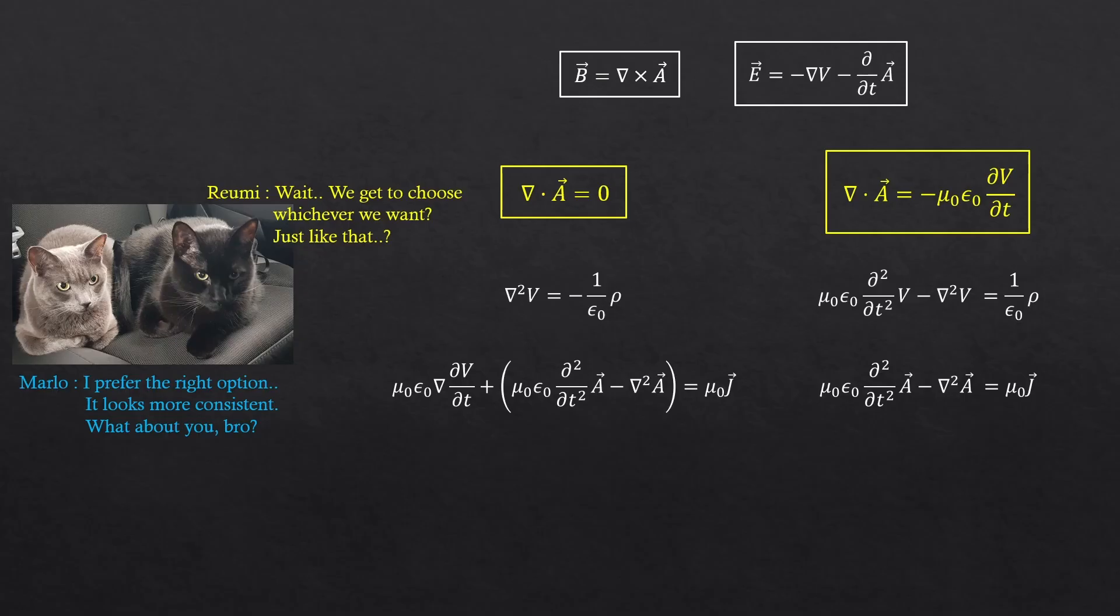The answer is, we're actually allowed, just with a few conditions. And we will still get the same electric field and magnetic field from both options. Don't worry. And how is it possible? Get ready. You're about to learn one of the most interesting ideas in physics.